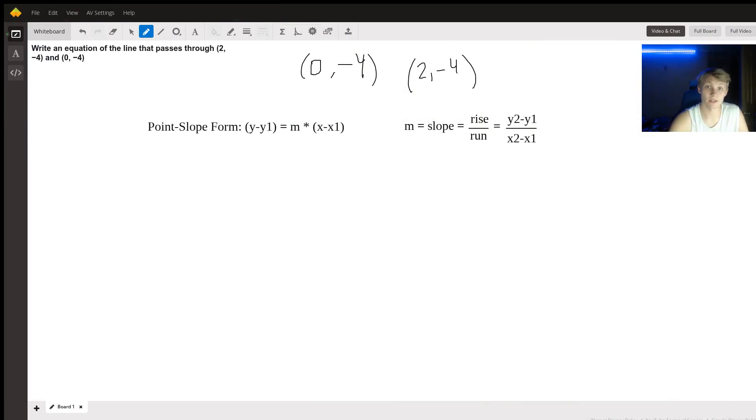Hi, so here we're trying to solve a problem asking us to find the equation of a line when we're given two points that the line passes through. So where do we start?